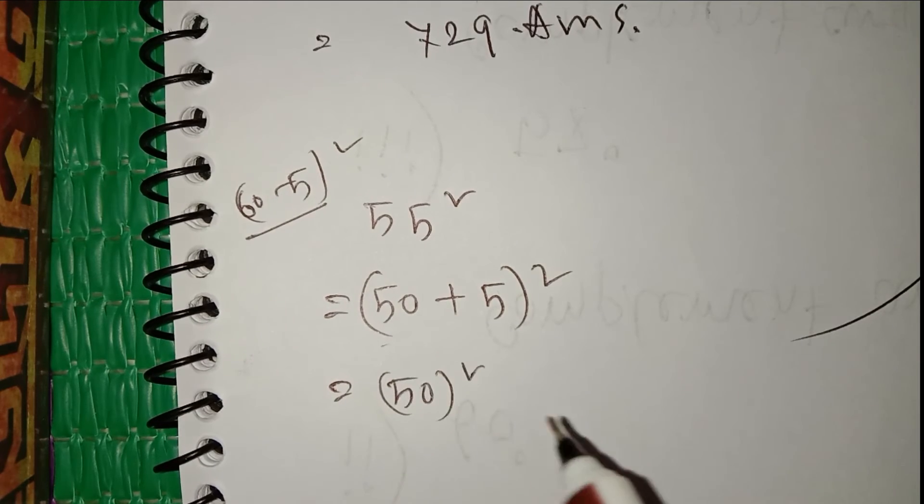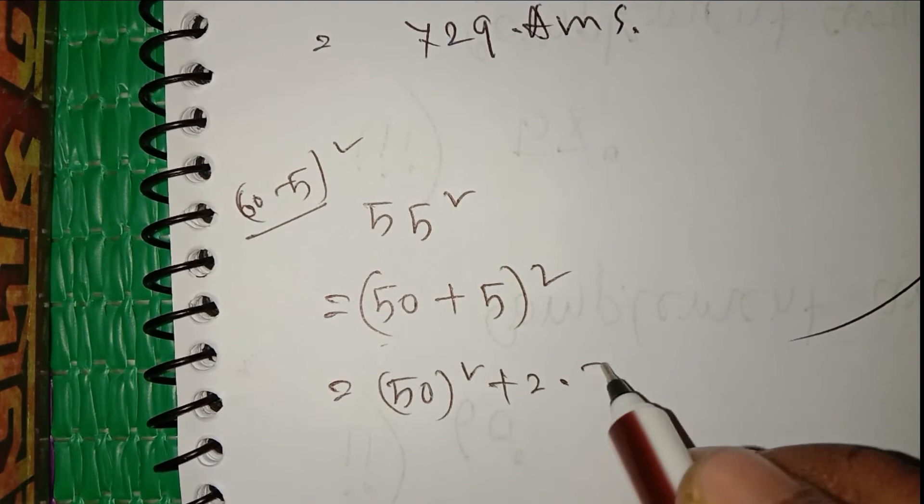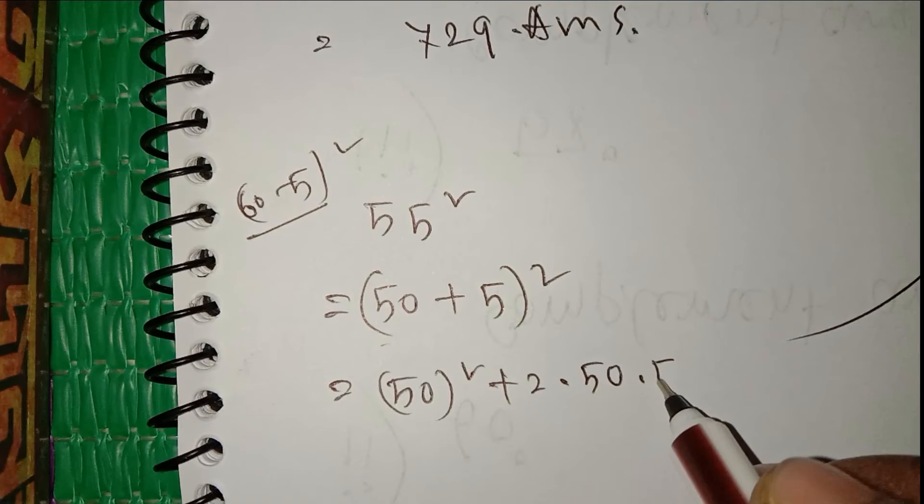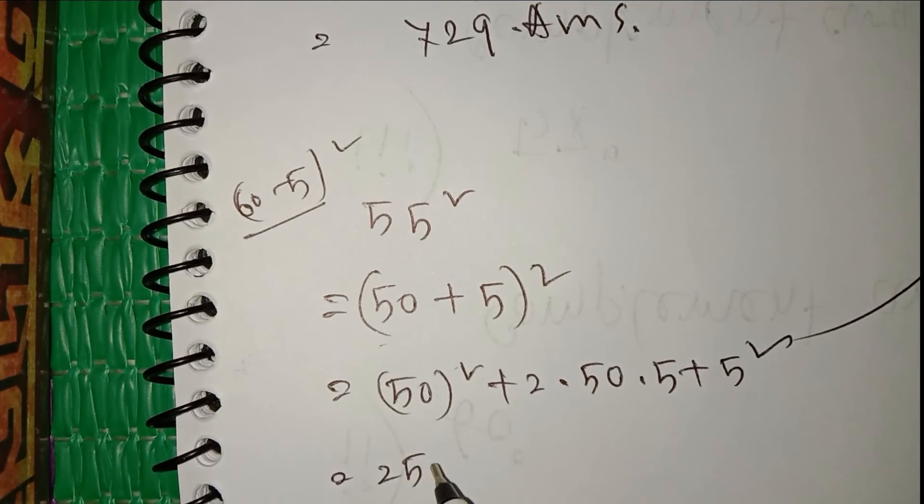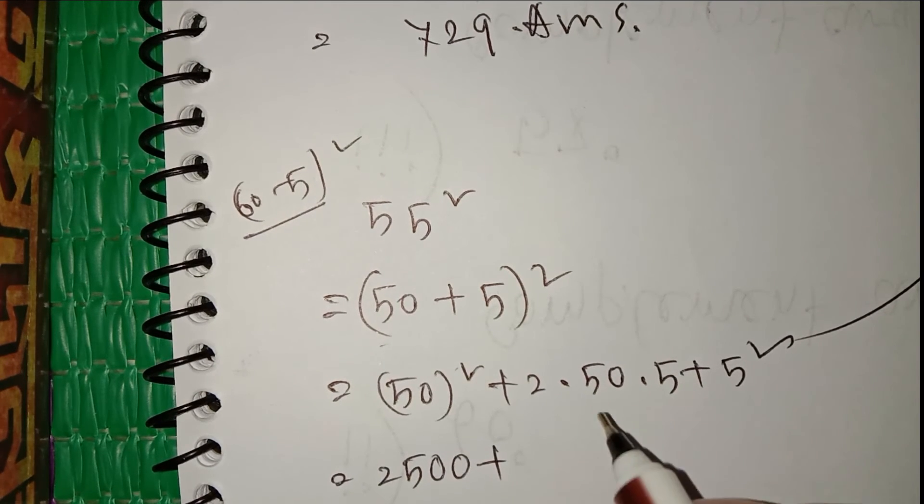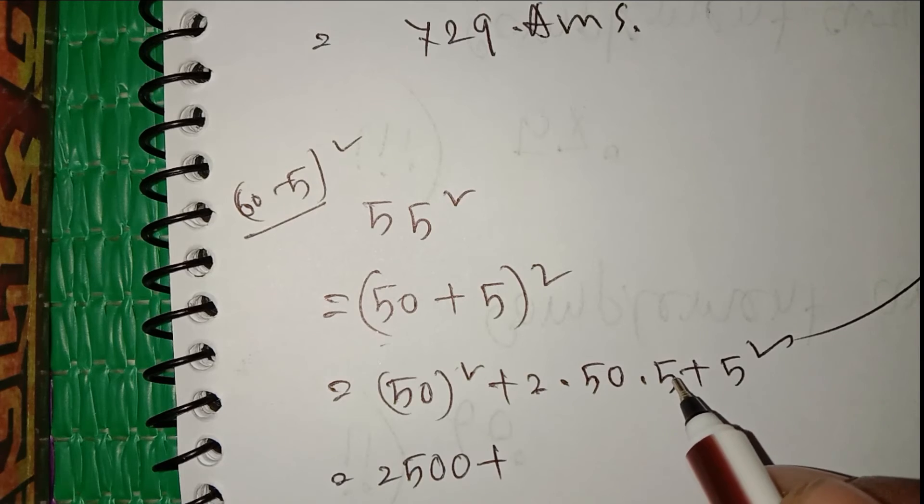50 whole square plus 2 times 50 times 5 plus 5 square. 5 times 5 equals 25. Here is 100, so it will be 2,500 plus 25.